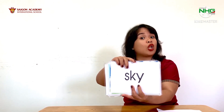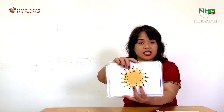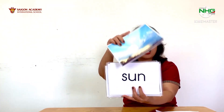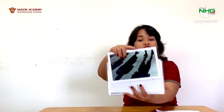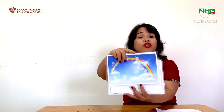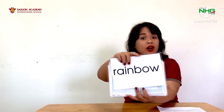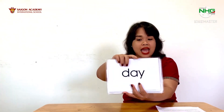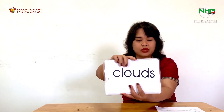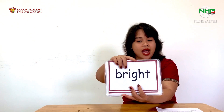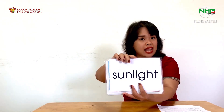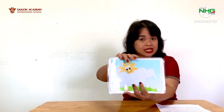Let's do it again. This time we'll do it slowly. Moon, sun, light, plants, shadow, rainbow, day, clouds, night, bright, sunlight, daytime, sky.